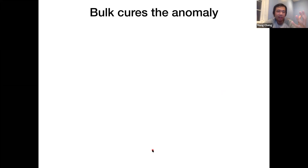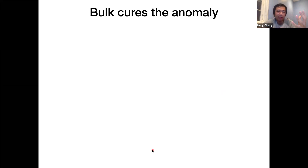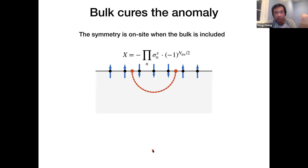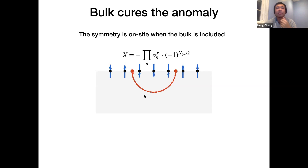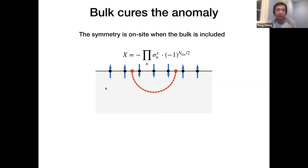If you include the bulk, there's nothing weird about this transformation — the symmetry is completely on-site in the bulk, you just flip all the spins. The sign factor actually comes from the same kind of sign factor in the ground state wave function. The way this anomaly is fixed by the bulk is because a domain wall, which might appear as a point in the one-dimensional magnet, actually goes into the two-dimensional bulk. Once you recognize there's a two-dimensional bulk, nothing is strange. The sign factor merely comes from the bulk wave function.